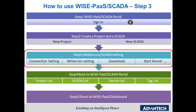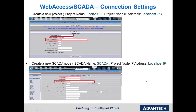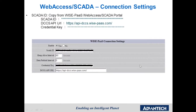Step 3 is to go to WebAccess SCADA settings. Open your project homepage and create a new project — give it a name and an IP address. After creating a project, create a new SCADA node and give it a name and IP address. Then go to WISE-PaaS connection settings in the node property and paste the SCADA ID, the DCCS API URL, and the credential key from the WISE-PaaS SCADA portal.